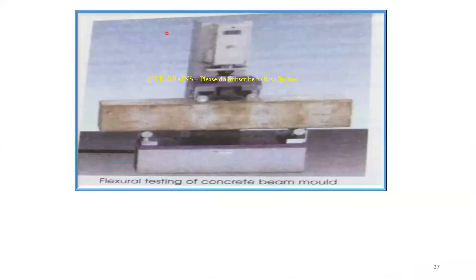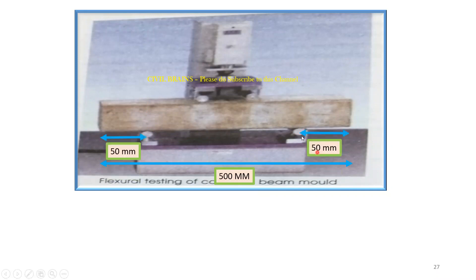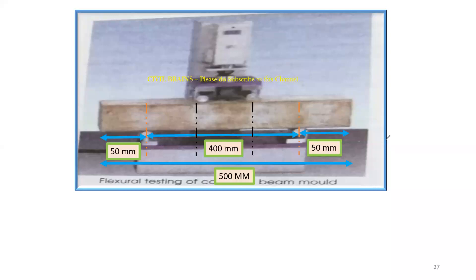For the 500mm specimen: outer-to-outer is 500mm. With 50mm offsets on each side, the effective span is 500 − 50 − 50 = 400mm. Dividing 400mm into three equal parts: 400 ÷ 3 ≈ 133mm. So the three equal divisions are 133mm, 133mm, and 133mm.